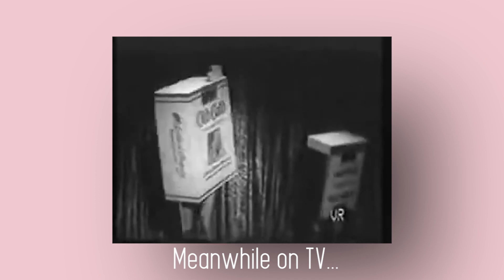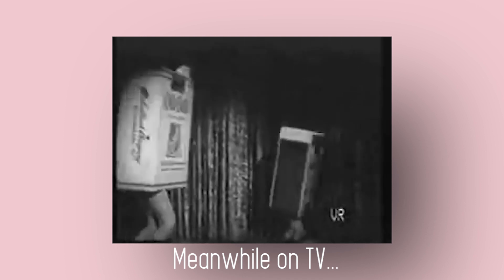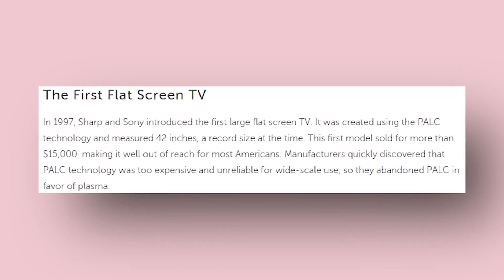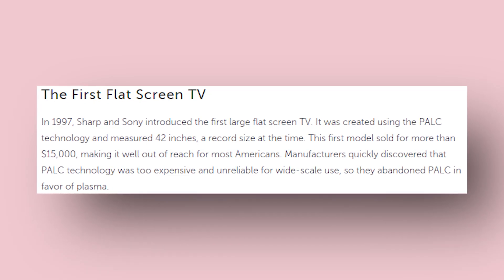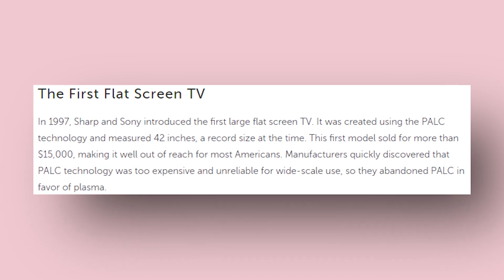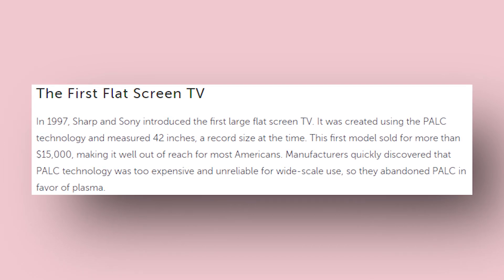After TV had long ruled the 4 by 3 aspect ratio, the platform had a need to ascend further. The technology and the content of TV started improving rapidly in the late 90s and early 2000s.